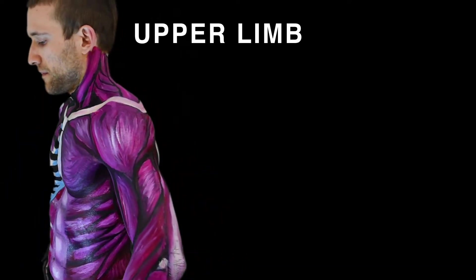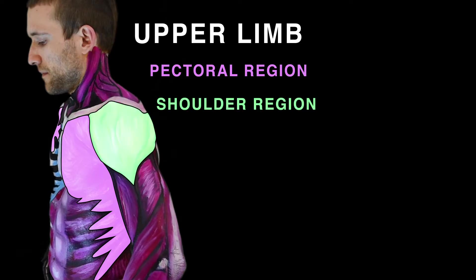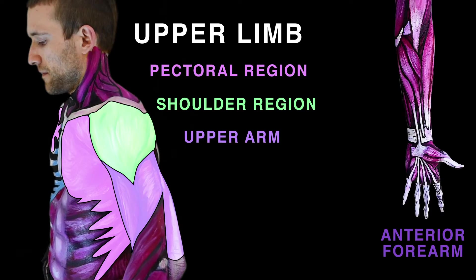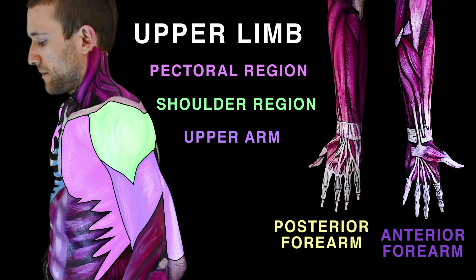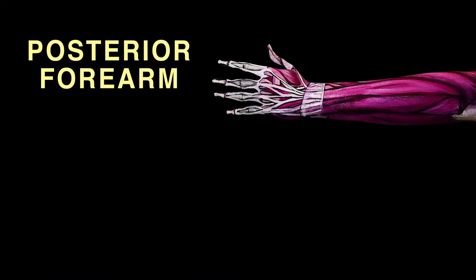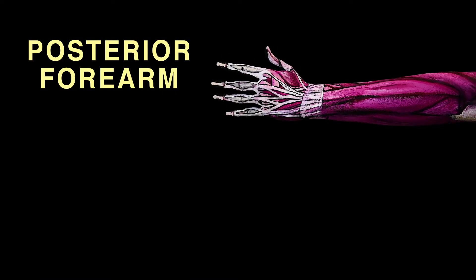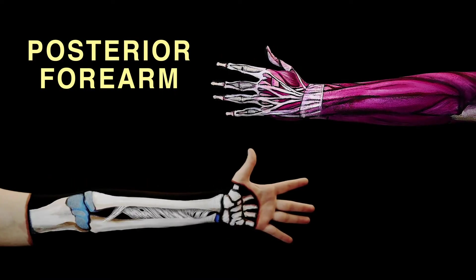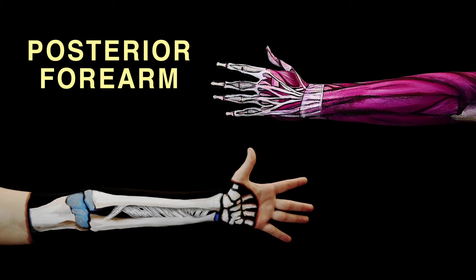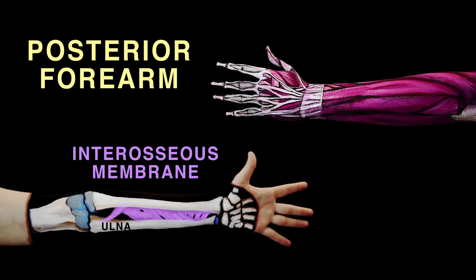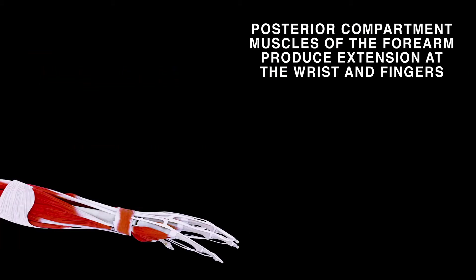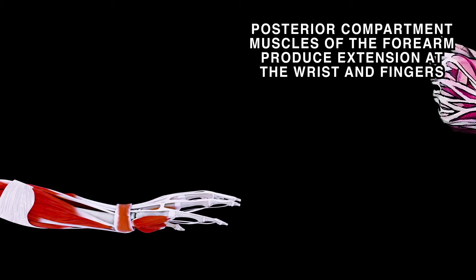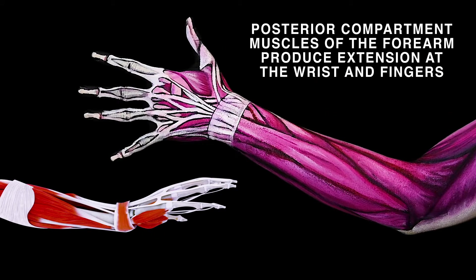The upper limb has six categories of muscles: the pectoral region, shoulder, upper arm, anterior forearm, posterior forearm, and hand. In this video, we will discuss the posterior forearm, which is separated from the anterior compartment by the interosseous membrane between the ulna and the radius. The posterior compartment muscles of the forearm produce extension at the wrist and fingers, and are hence also known as the extensor muscles.